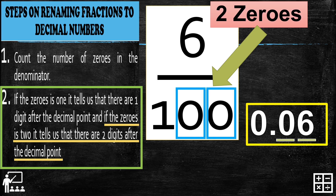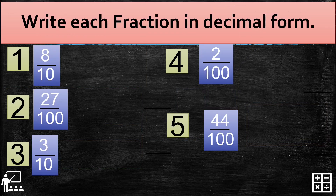If there is a missing number in the numerator, just add 0 as a placeholder for the other digit. Now let's try — write each fraction in decimal form on a piece of paper or anything you can write on. I'll give you 20 seconds for this activity. 20 seconds starts now.